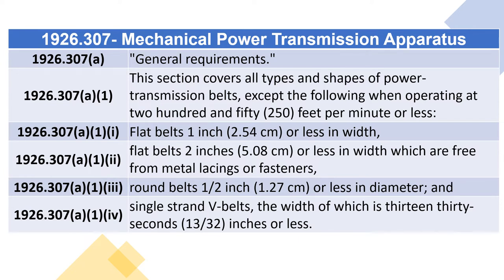1926.307 Mechanical Power Transmission Apparatus. 1926.307(a) General Requirements. 1926.307(a)(1): This section covers all types and shapes of power transmission belts except the following when operating at 250 feet per minute or less: flat belts one inch (2.54 cm) or less in width; flat belts two inches (5.08 cm) or less in width which are free from metal lacings or fasteners; round belts half an inch (1.27 cm) or less in diameter; and single strand V-belts the width of which is 13/32 inches or less.